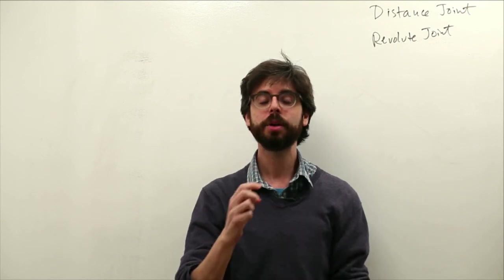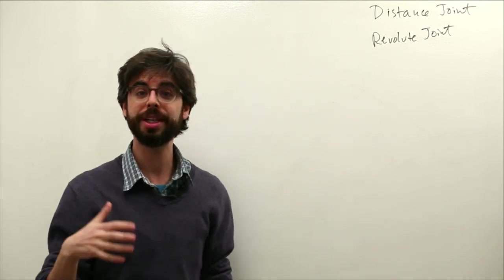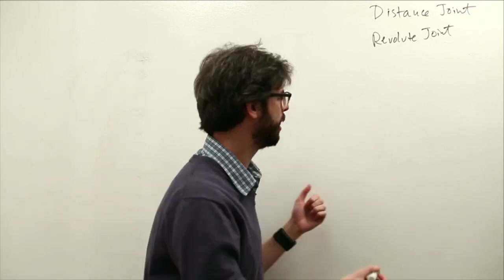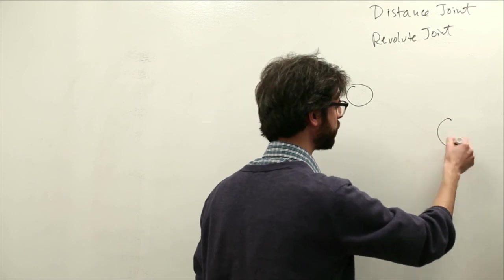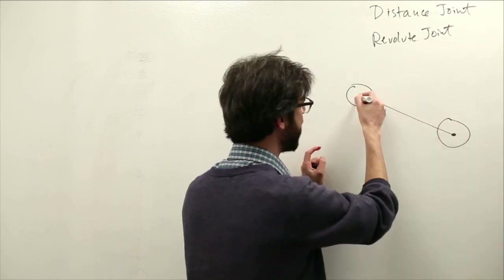Okay so what is a joint? Let's look at first at a distance joint. A distance joint is essentially a spring that we're going to put between two objects. We can visualize it like this. We have two Box2D bodies and here's a joint connecting them.